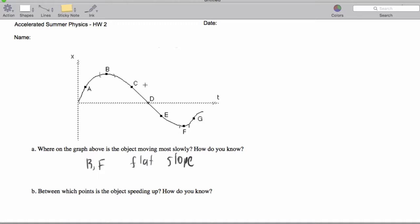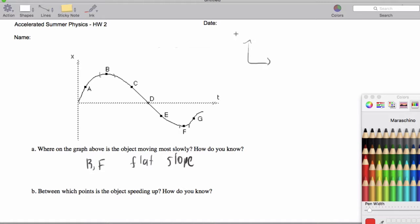Now between which points is the object speeding up? When we had constant velocity graphs, we knew if we had position versus time that a graph like this for object A compared to this for object B, we knew that A was faster than B because the graph was steeper.